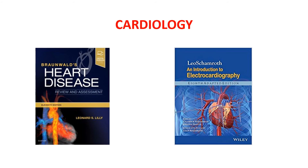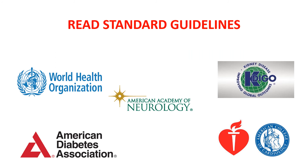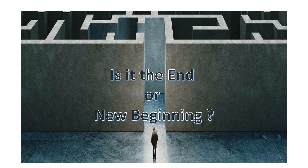One reminder: all these books are pretty expensive and it is not a mandate to have a hard copy of each. You can do with a soft copy in PDF version on your tablet or mobile phone, and the best thing would be to just have the book of the superspecialty you want to pursue later. A very important thing is to read standard guidelines — for cardiology, read the guidelines of the American College of Cardiology; for nephrology, read the KDIGO guidelines; for neurology, read the AAN guidelines. All these guidelines even have a mobile app, so you can download the app and keep those guidelines in your pocket.